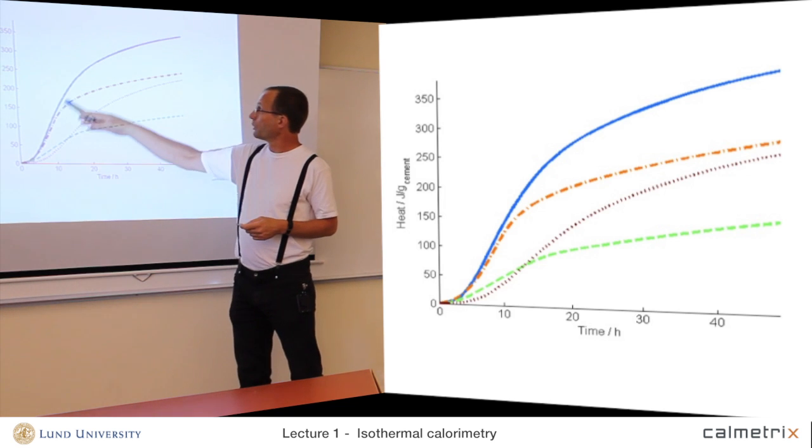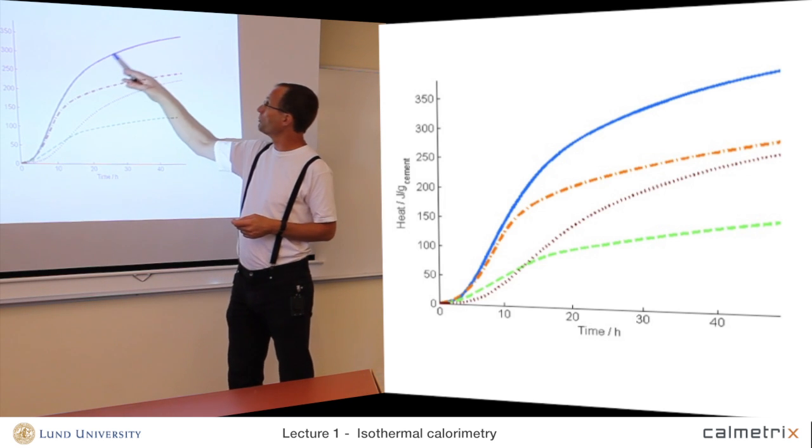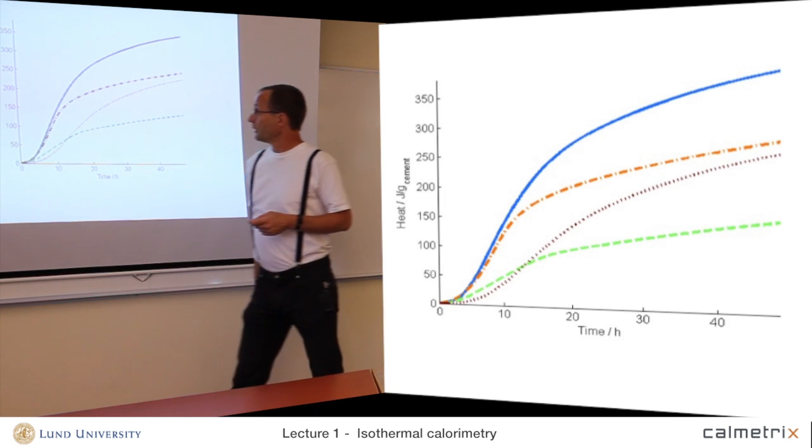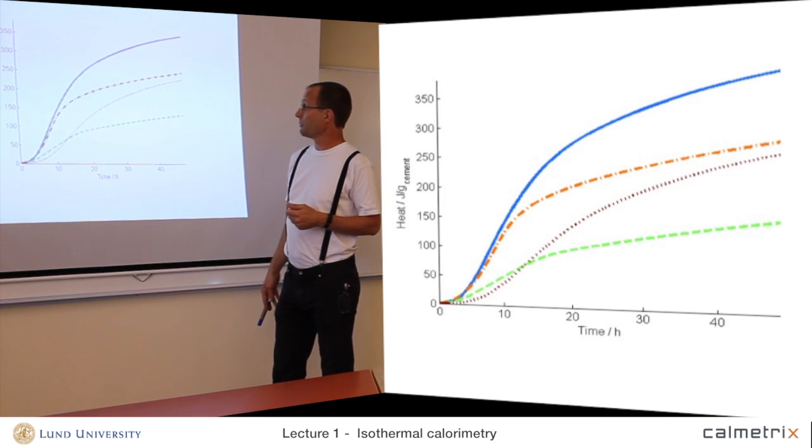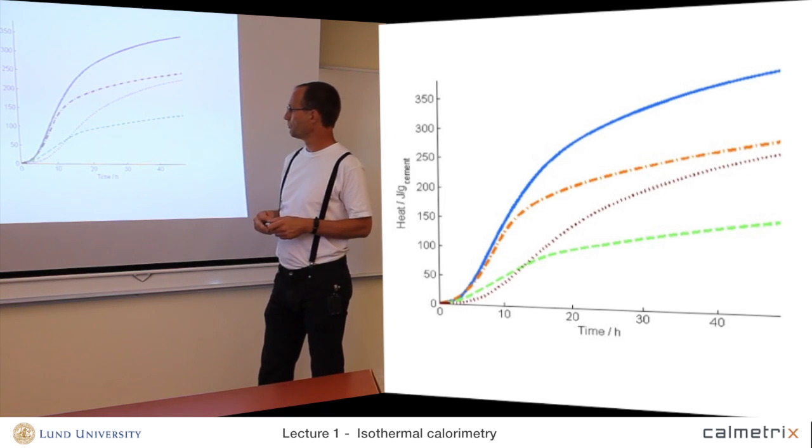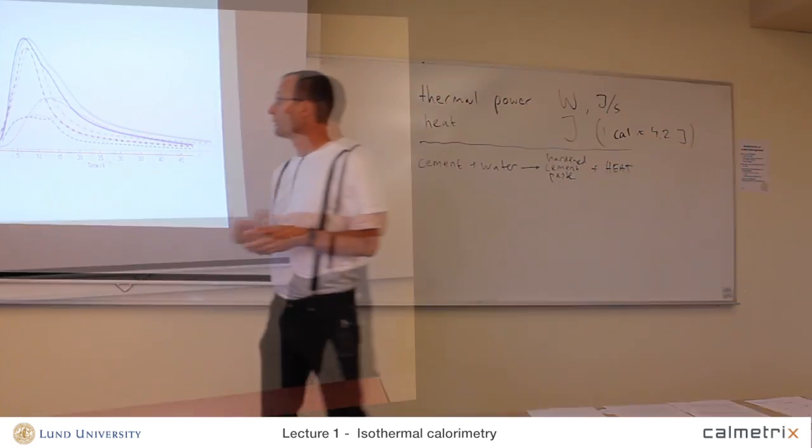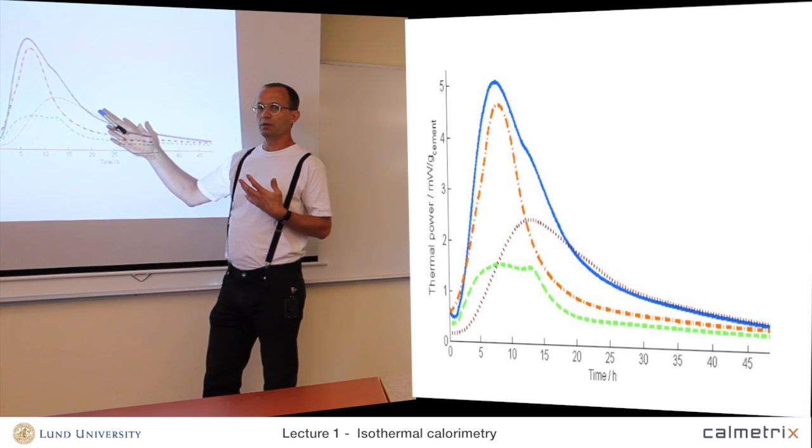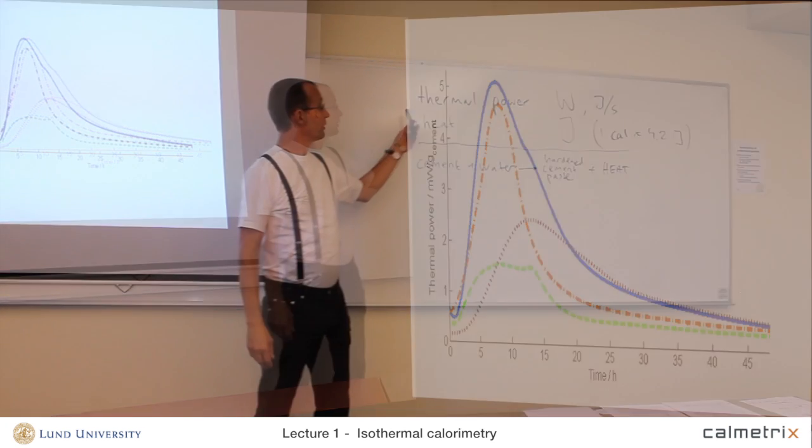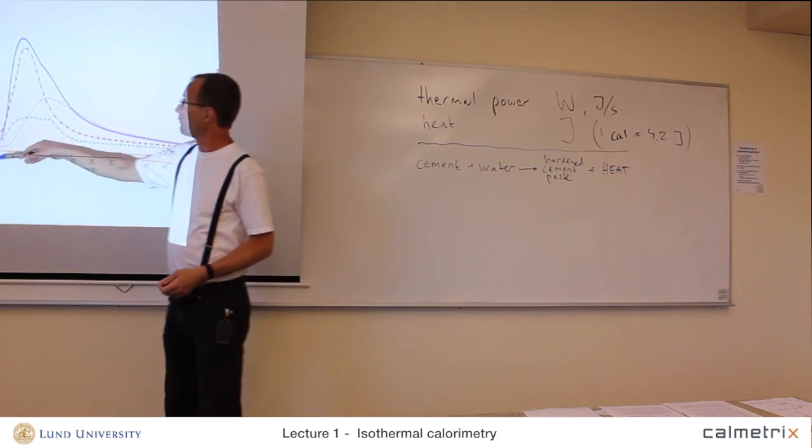We see the blue curve that was the one with the highest peak, highest thermal power. It's also on top here because it produces most heat. Now the heat here is in joules per gram cement. We see that the slag cement has a much slower reaction rate. The thermal power is essentially the reaction rate. So we're looking at the rate of reaction, in this case of cement, the heat produced per second when this reaction takes place.